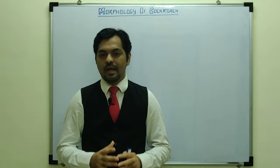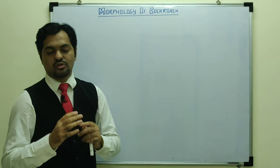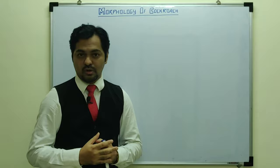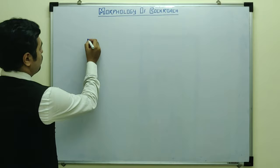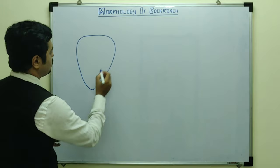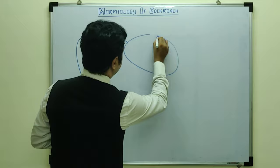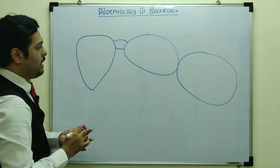Now the major discussion begins. I will be making a diagram, and simultaneously you should also make a large diagram so you can label many characteristic features. The body of the cockroach is divided into three regions: the first region is the head, the second region is the thorax, and the third region is the abdomen.